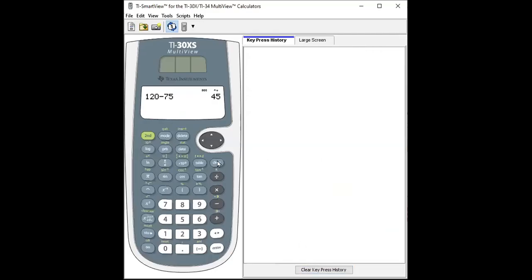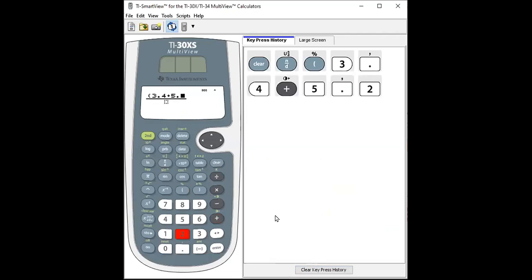So what we want is 3.4 plus 5.2 in the top of a fraction. So we use our N over D button, the left-hand parenthesis, and then enter your 3.4 plus 5.2. Directional pad down to get to the bottom of that fraction because we're going to divide it by two. Directional pad to the right to get out of the fraction and hit enter. The length of that median is 4.3.